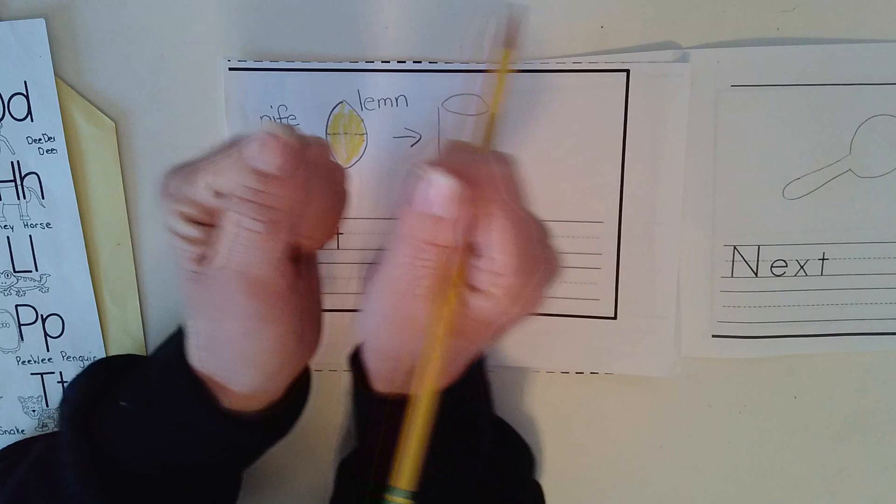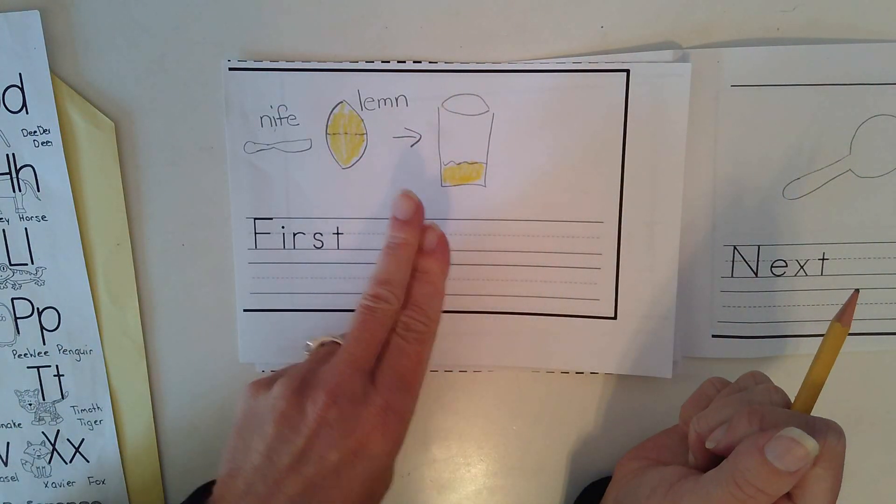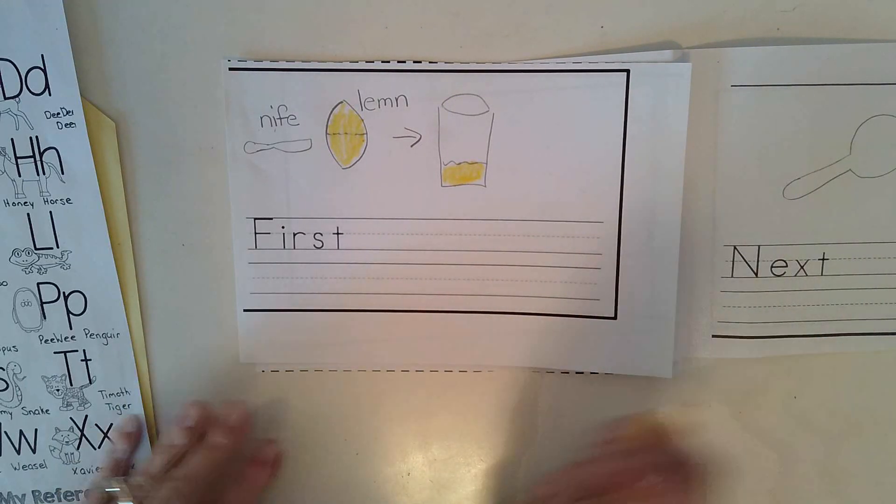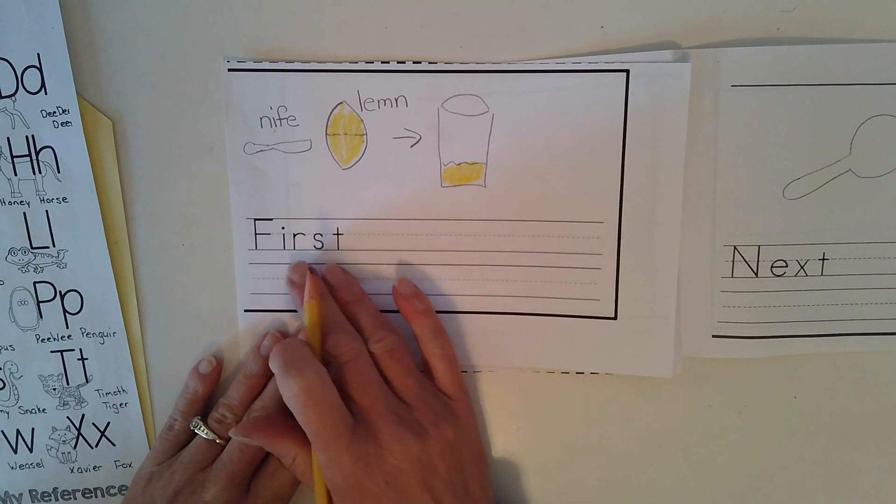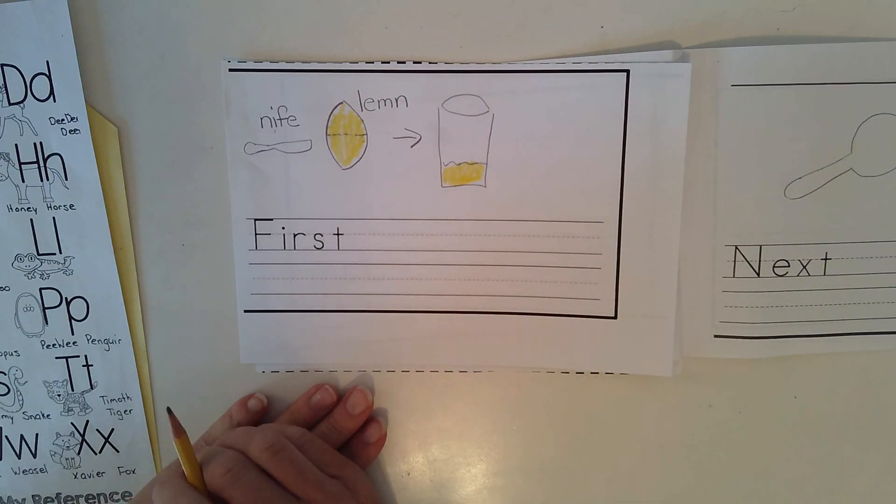we're stretching out the words. We're going to leave finger spaces in between the words, and we're going to have a period at the end because we're writing telling sentences. We're teaching people how to make lemonade. So would you please write what you do first? I'm going to do mine, but yours might be different.